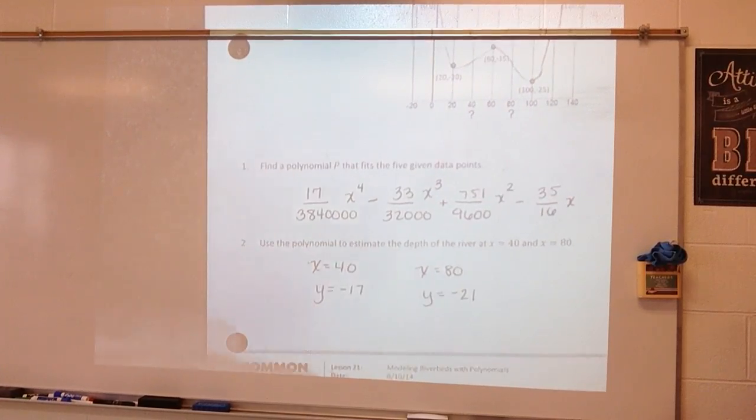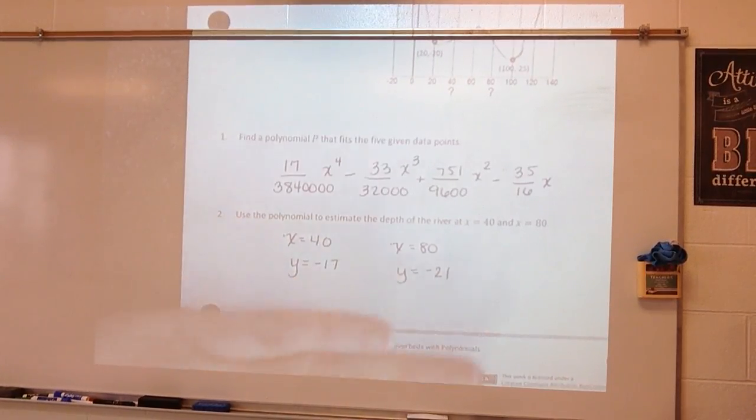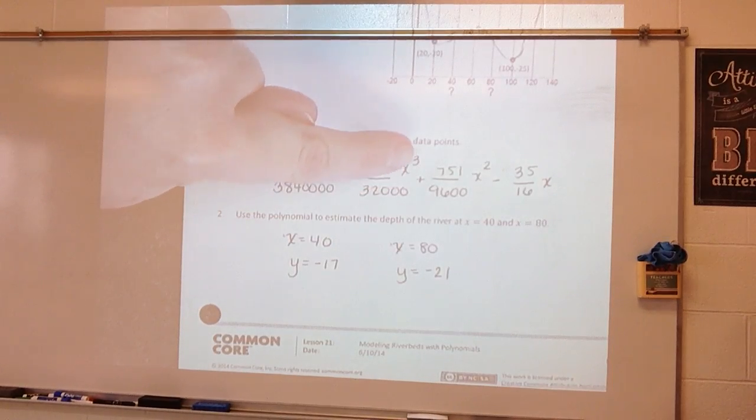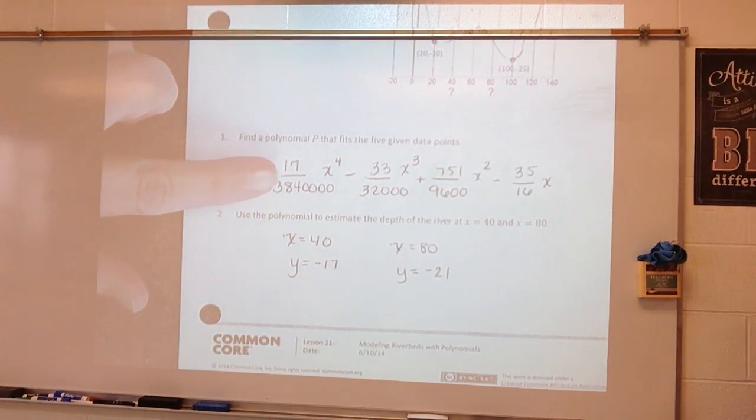So that's why I showed you the computer program because I don't want to do 40 to the 4th power and 40 to the 3rd power and then have to multiply it times 17 over 3,840,000. That's just going to give me anxiety because that's a lot of numbers there. So we figured this out.